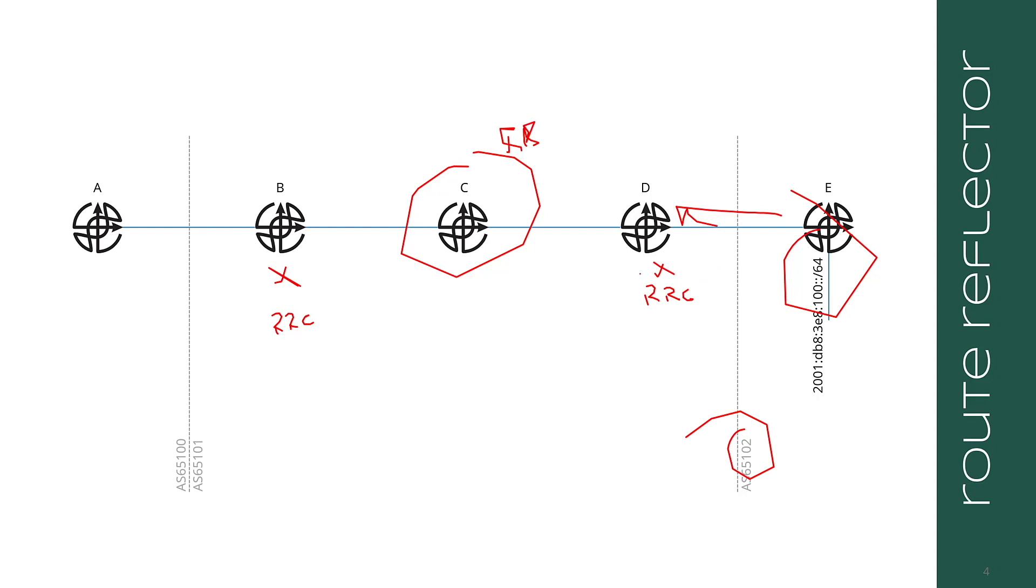Then what happens is E advertises 100::/64 to D. This means it has an AS path of 65102. When D picks it up, it doesn't even know it's a route reflector client. It just has an IBGP session to C. When it sends that route to C because it's an EBGP route, so it can send it to an IBGP peer.